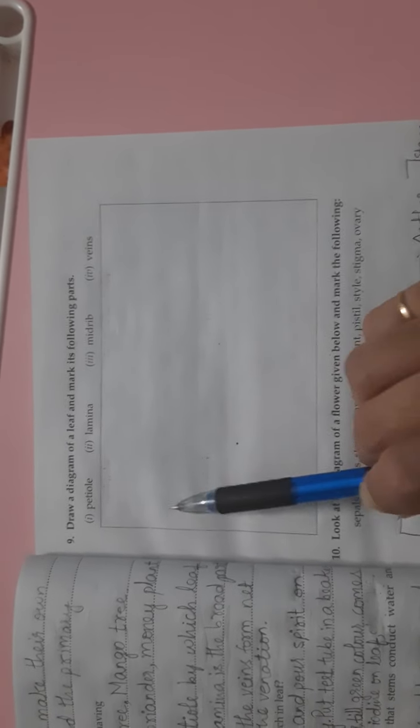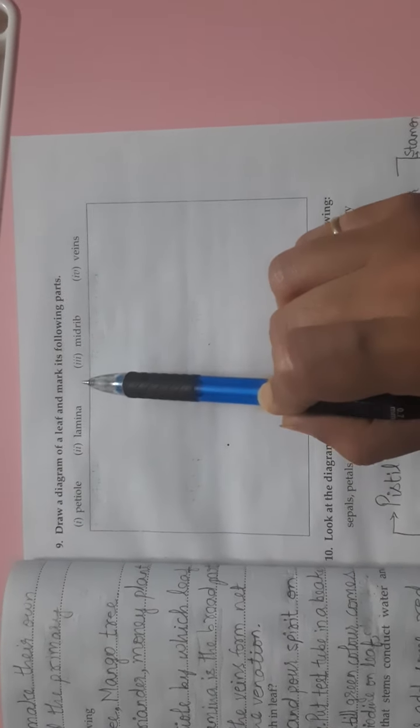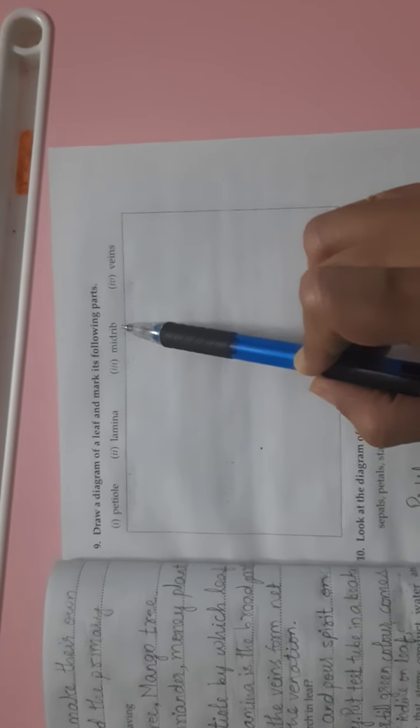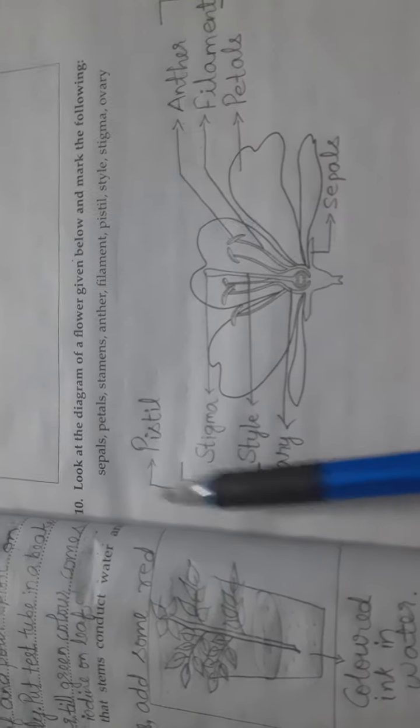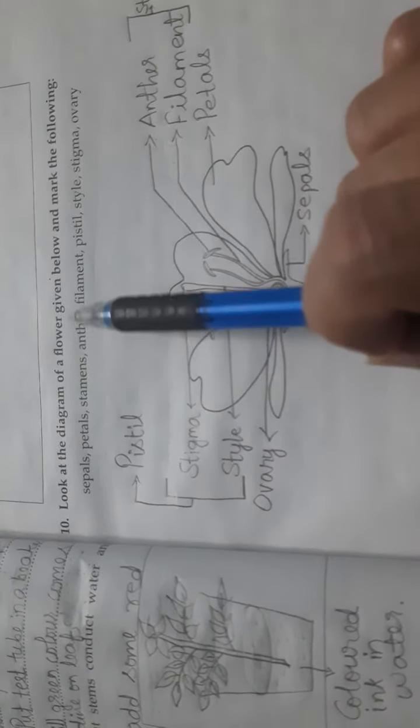Ninth question is, draw a diagram of leaf and mark its following parts. We all have seen in the other videos the diagram of a leaf. You have to draw the diagram of a leaf here and name all the four parts which are petiole, lamina, midrib and veins.